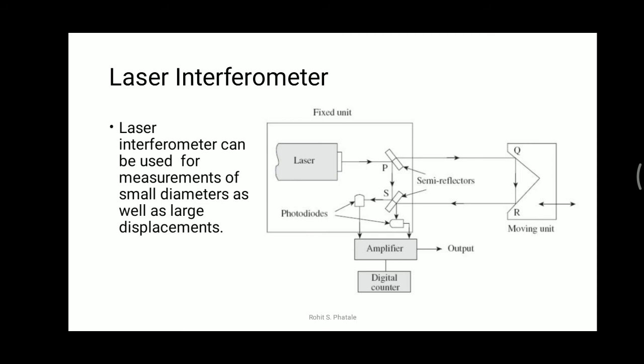If the moving slide is displaced by half a wavelength, then the path difference P-Q-R-S minus P-S becomes a full wavelength, and the output from the photo diode changes from maximum to minimum or minimum to maximum. This is the working of the laser interferometer.